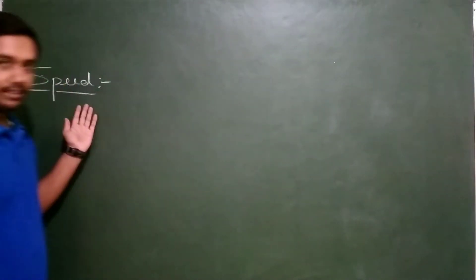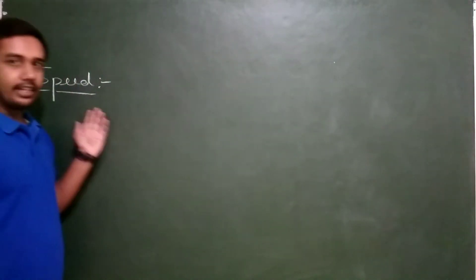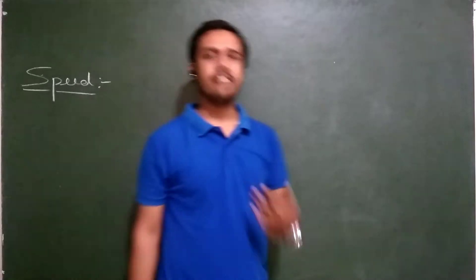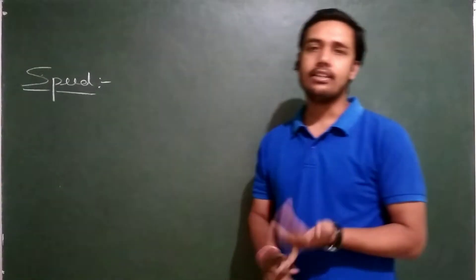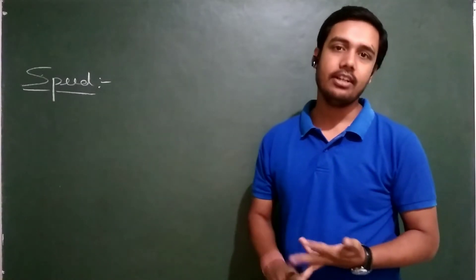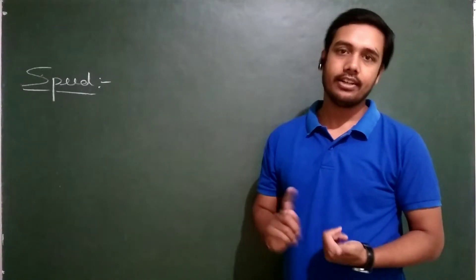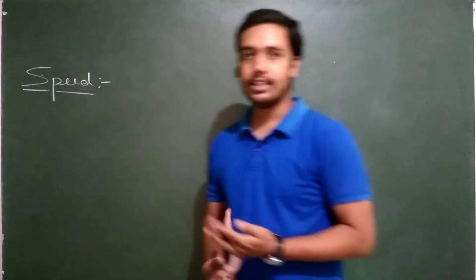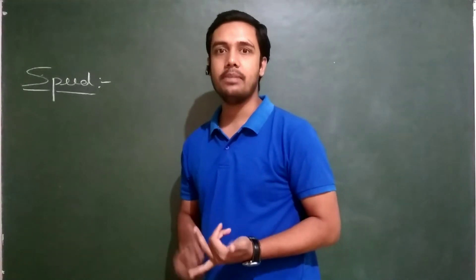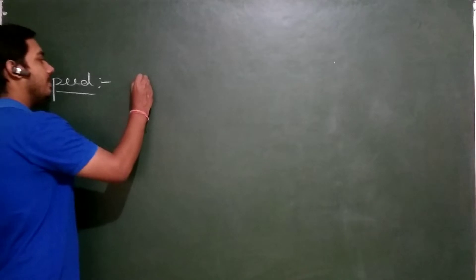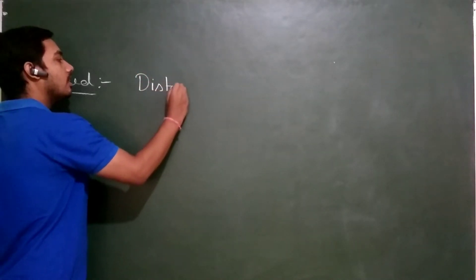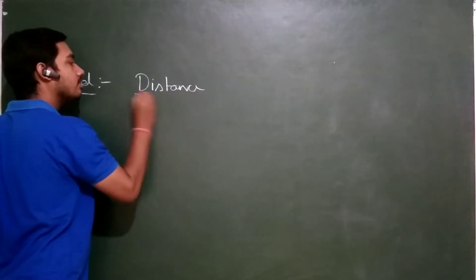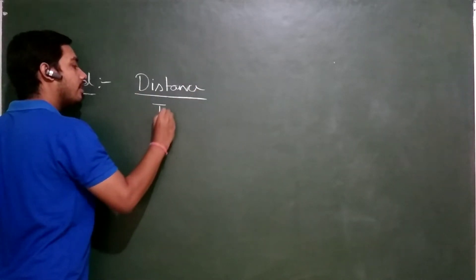What is speed? I think every one of you have read it and heard about it. Speed is nothing but distance travelled per unit time. So I can simply write the formula of speed: speed is equal to distance upon time.